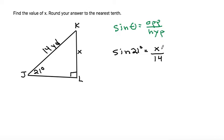From here, we just need to solve for x. Since x is divided by 14, we need to multiply both sides by 14. This 14 in the numerator cancels out with the 14 in the denominator, leaving just x on the right-hand side.